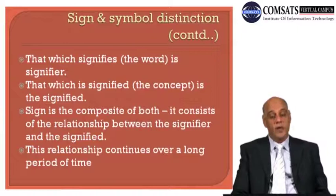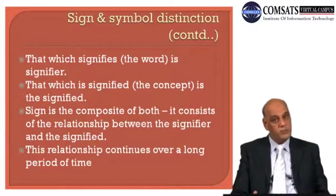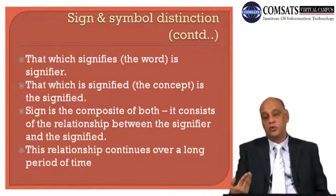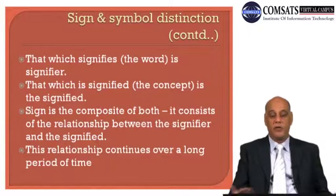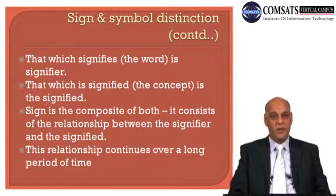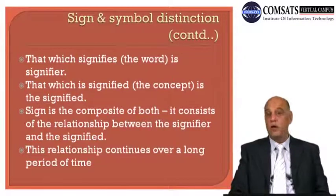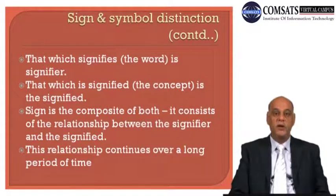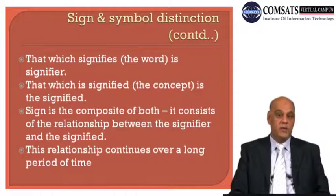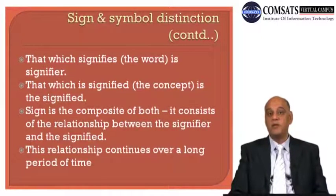Sign is a composite of both — it consists of the relationship between the signifier and the signified. Sign is basically the relationship between the signifier and the signified. This relationship continues over a long period of time. Once this relationship has been made, it's not changed — it continues over a long period of time.